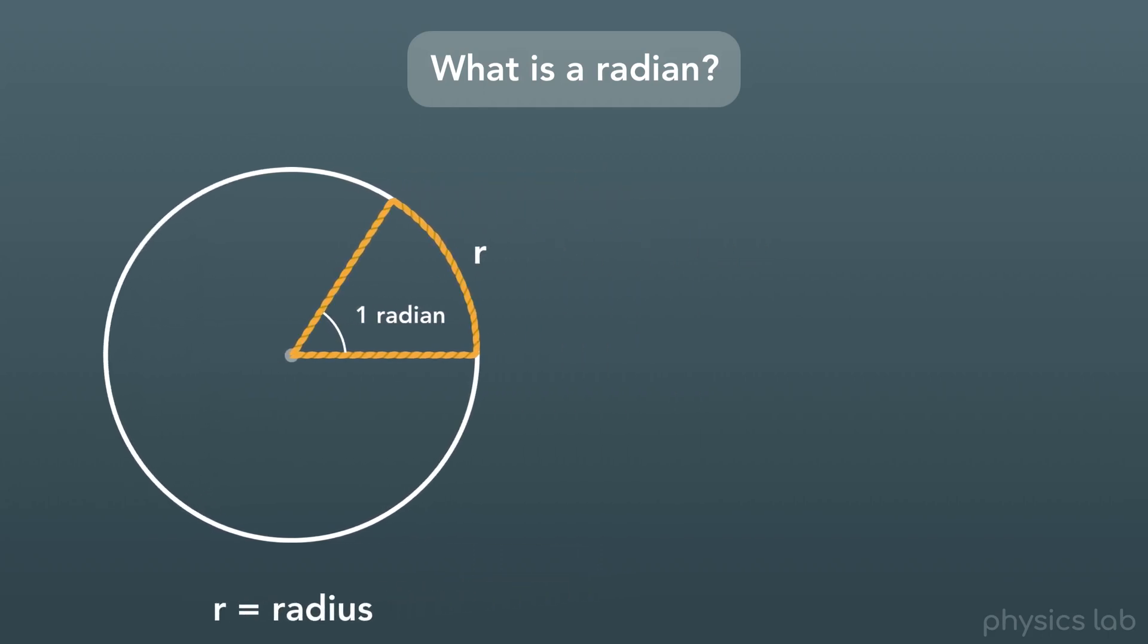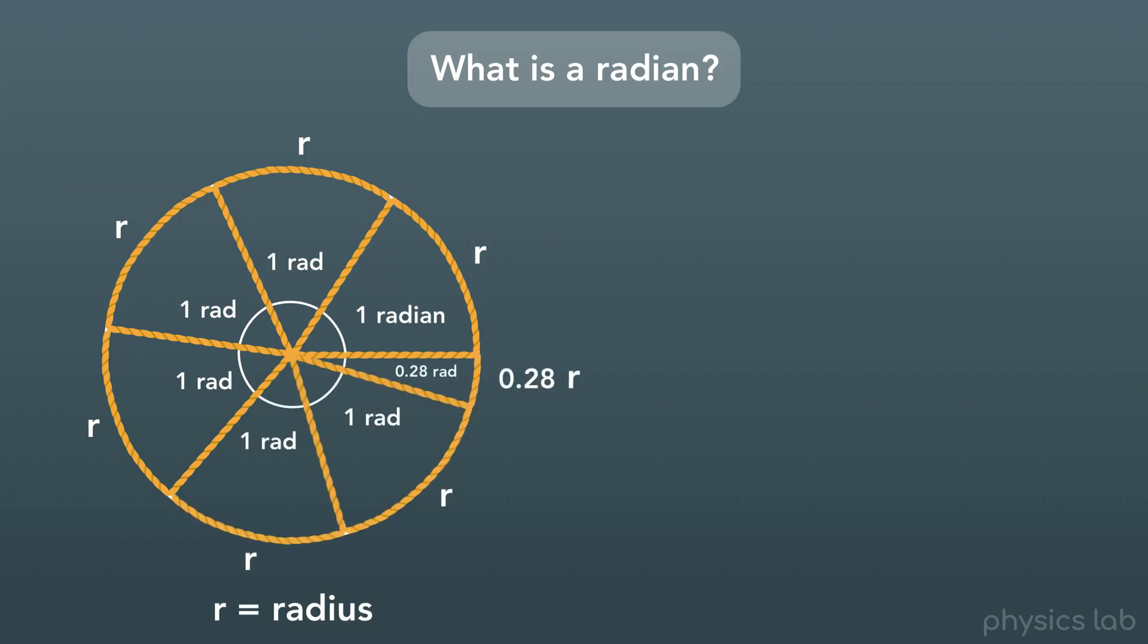So pretty interesting. When we count the number of radians in a circle, that's how we end up with 2 pi radians, which is about 6.28 radians.